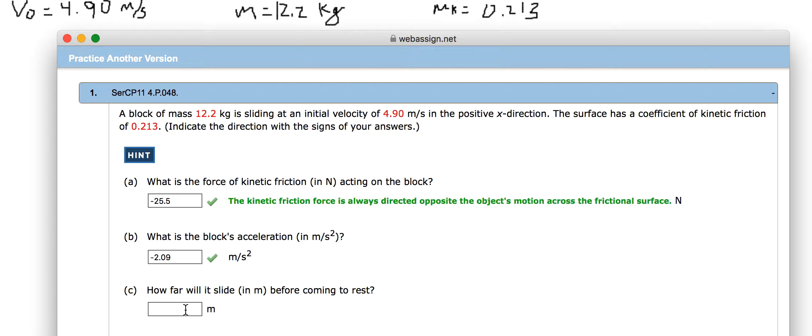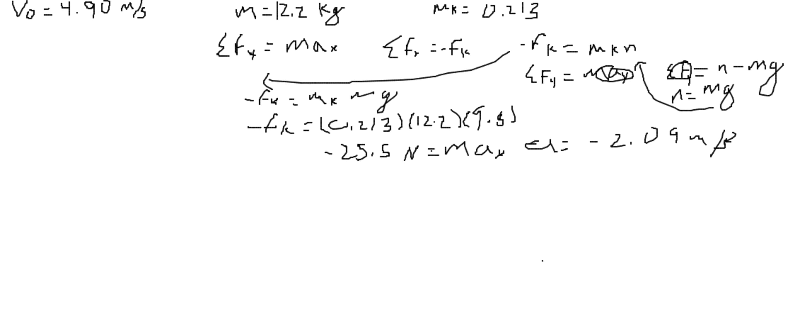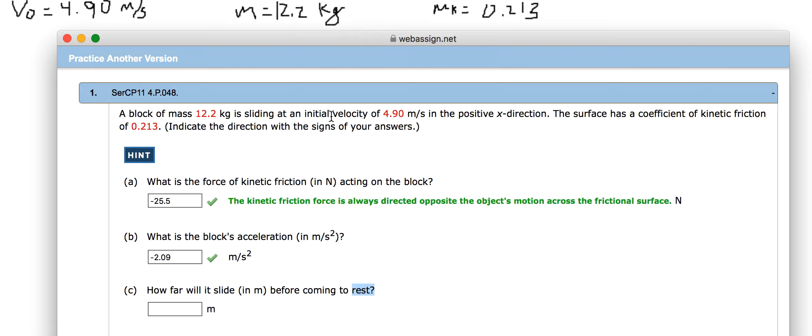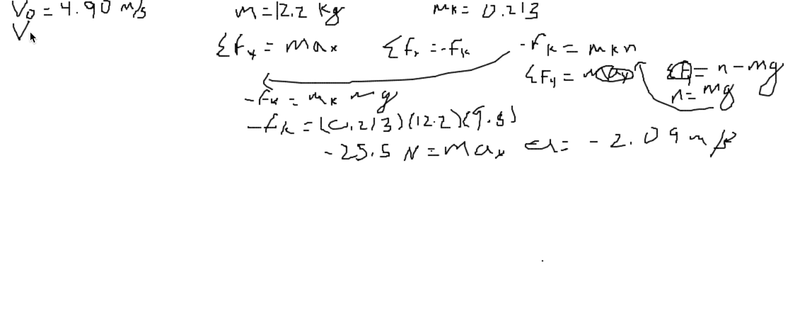And now, how far will it slide before coming to rest? Coming to rest is the indication that means that vf, or the final velocity, is going to be 0. And we know our initial velocity is 4.9 meters per second. So vf is equal to 0 meters per second.